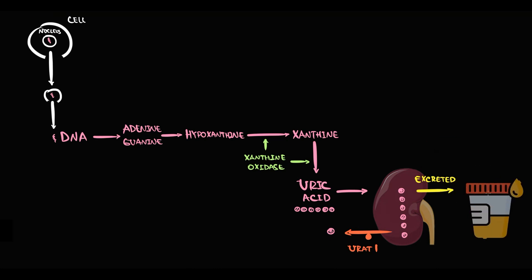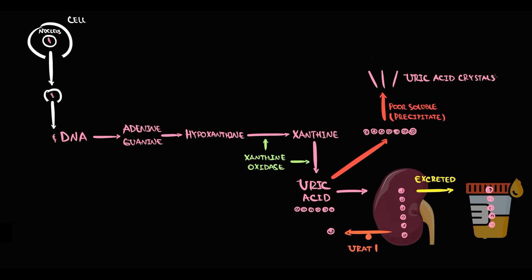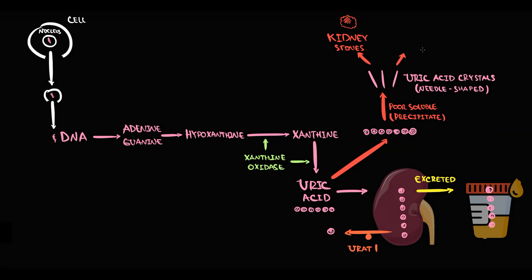Increasing uric acid can be dangerous. Uric acid is a poorly soluble molecule, and because of this, uric acid easily precipitates with formation of uric acid crystals. The signature feature of uric acid crystals is their needle shape. The formation of uric acid crystals in the kidney tubules can cause kidney stones, and accumulation of uric acid stones in the kidney tubules can at some point cause acute kidney injury.